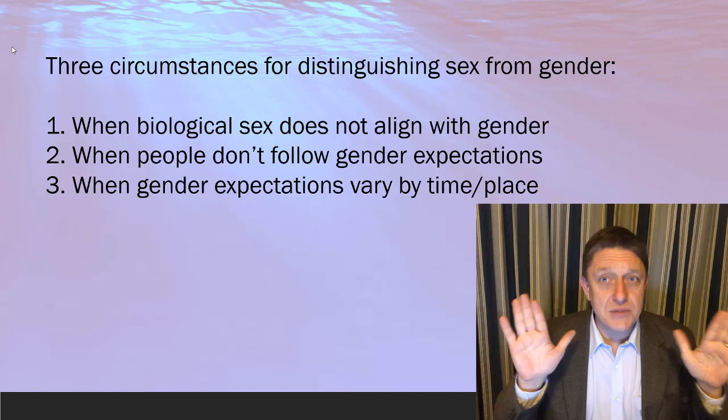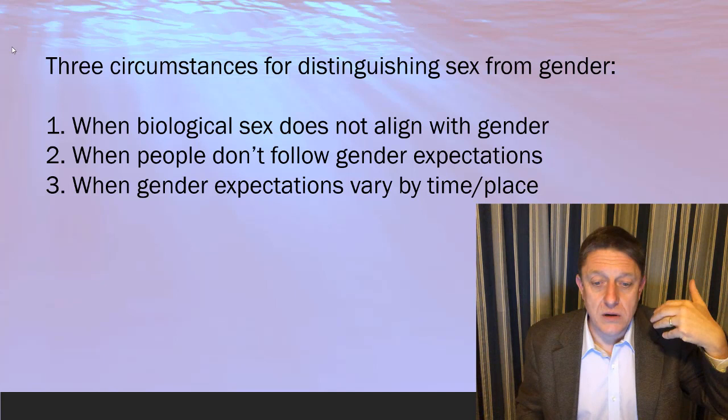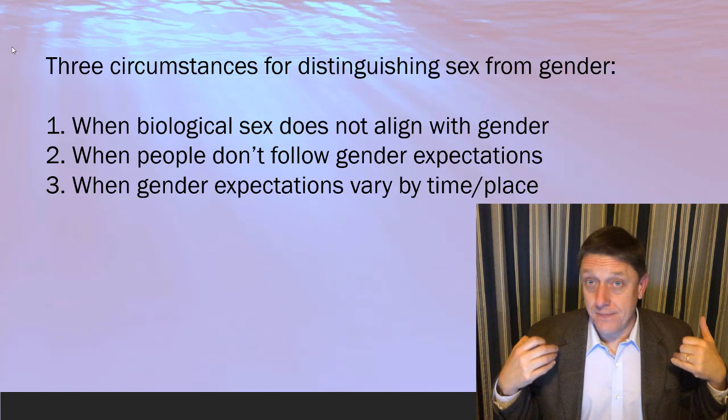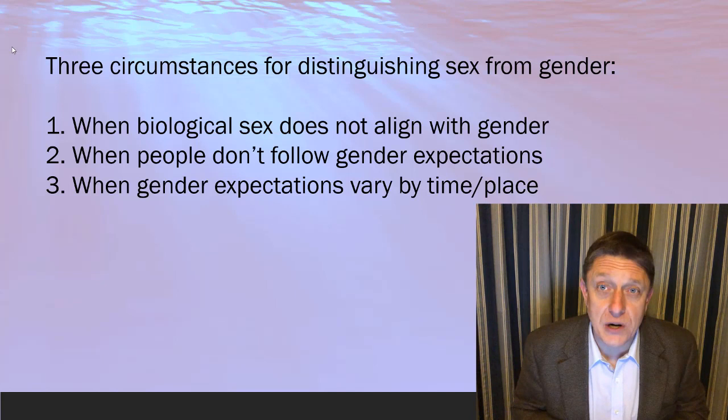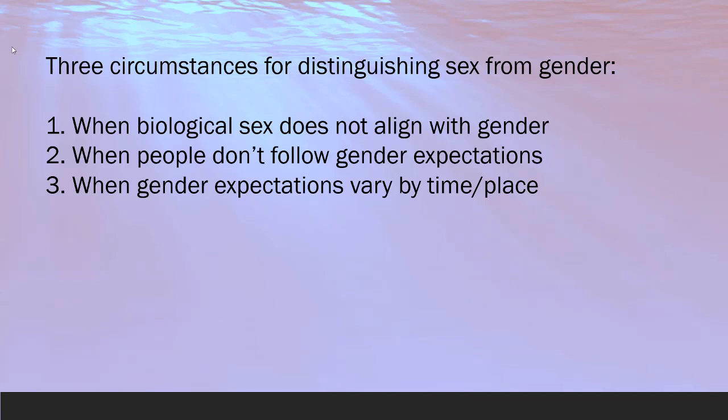We're going to look for circumstances in which sex and gender don't seem to correspond. First, when biological sex does not align with gender. Second, when people don't follow gender expectations. And third, when gender expectations vary by time and place — which should not be happening if this is a fixed biological property coming from the existence of chromosomes that generate primary and secondary sex characteristics. So let's look at those in turn.